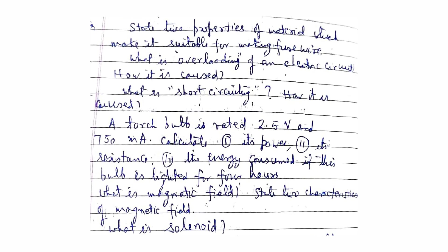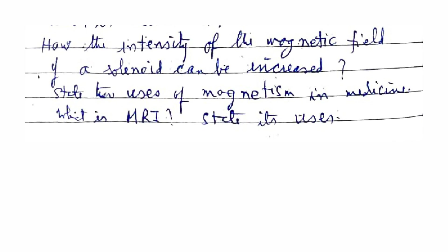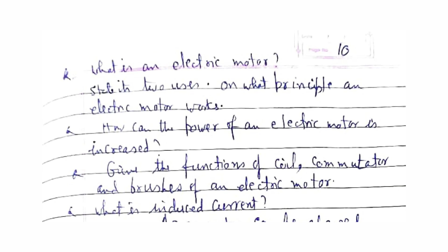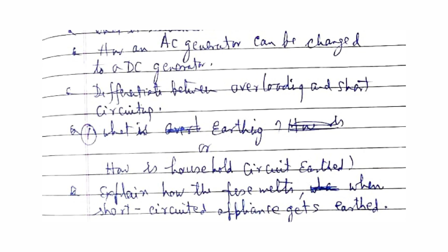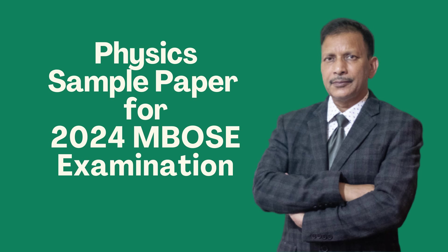What is a magnetic field? State the true characteristics of a magnetic field. What is a solenoid and how can the intensity of a magnetic field of a solenoid be increased? State the uses of magnetism in medicine. What is MRI and state its uses. What is an electric motor? State its uses. On what principle does an electric motor work? How can the power of an electric motor be increased? Give the function of the coil, commutator, and brushes of an electric motor. What is induced current? How can an AC generator be changed to a DC generator? Differentiate between overloading and short-circuiting. What is earthing? How is a household circuit earthed? Explain how the fuse melts when a short-circuited appliance gets earthed.